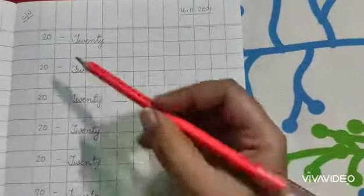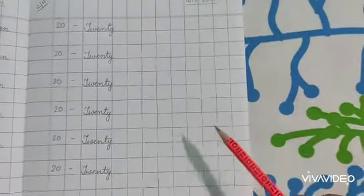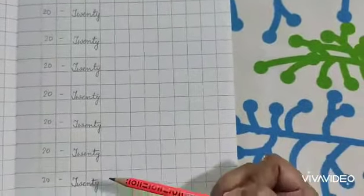So, at first you mention the number and leave one line, then you write the number name that is 20, okay?